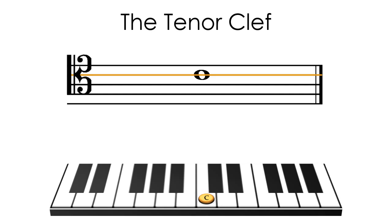When found on the fourth staff line, the C clef is called the tenor clef. The bassoon, cello, euphonium, double bass, and trombone are some instruments which use this clef.